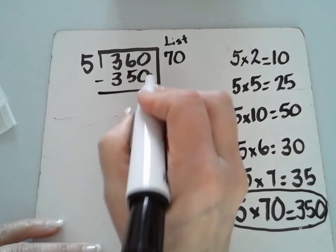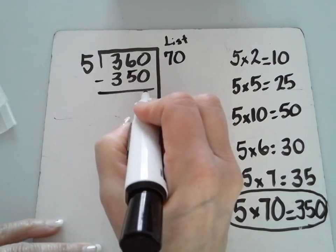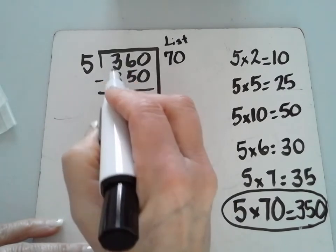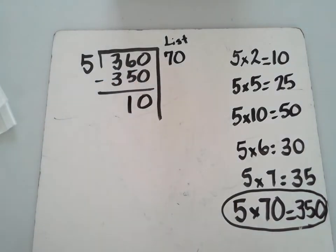Now, the 350, this number, I'm going to use to subtract from this number. Okay. Now, we subtract. Zero subtract zero. Six subtract five is one. And three take away three. I don't have anything left there.